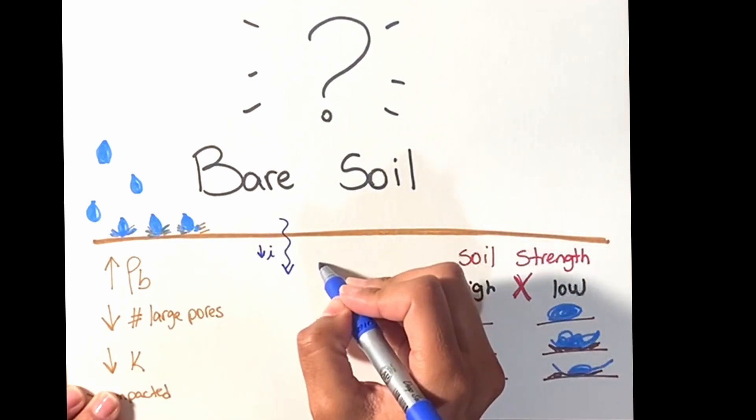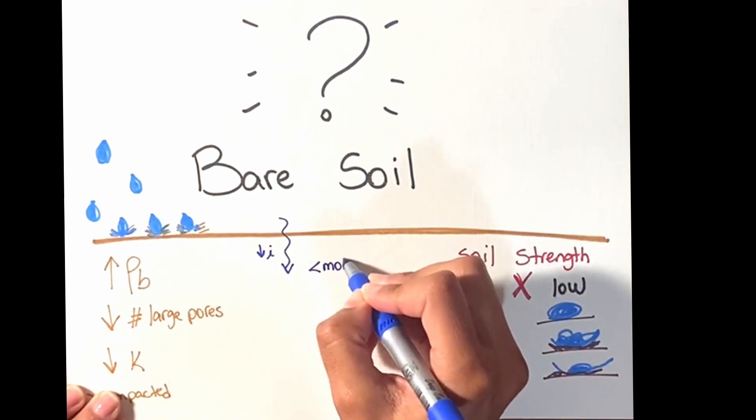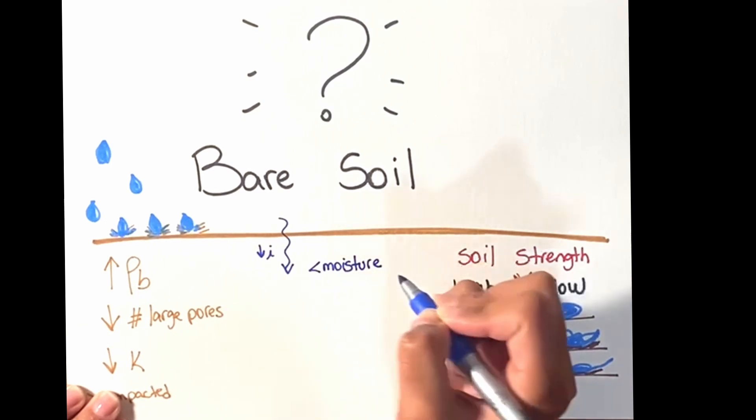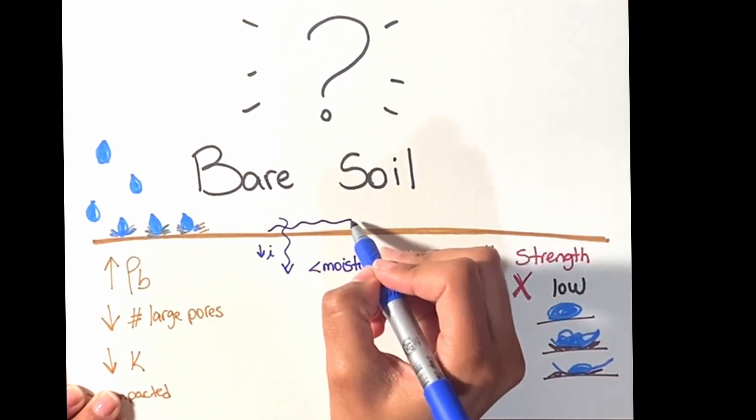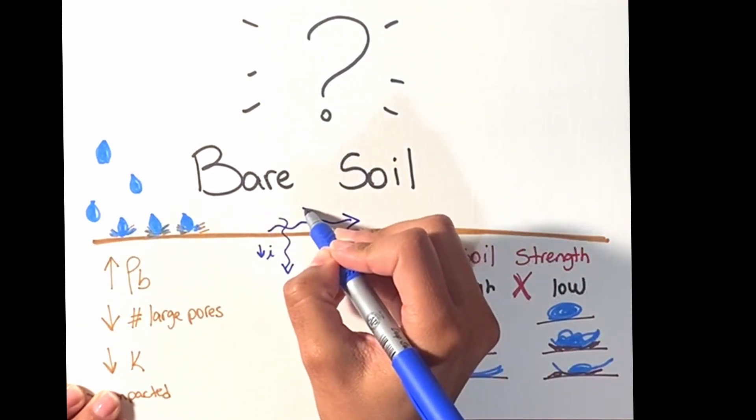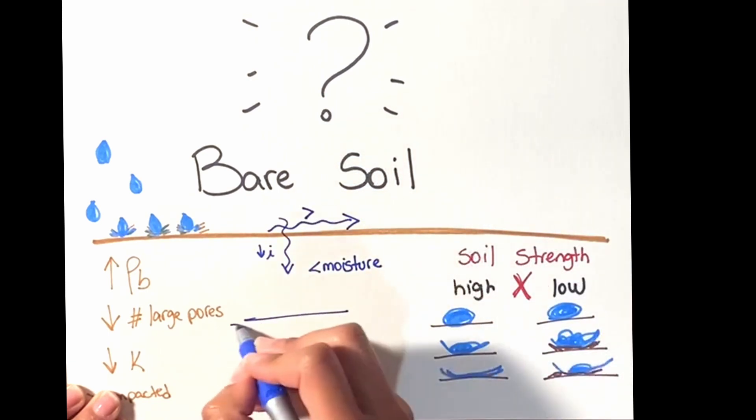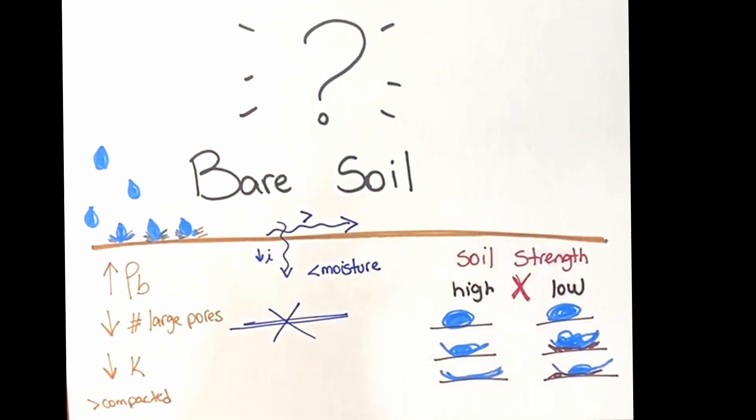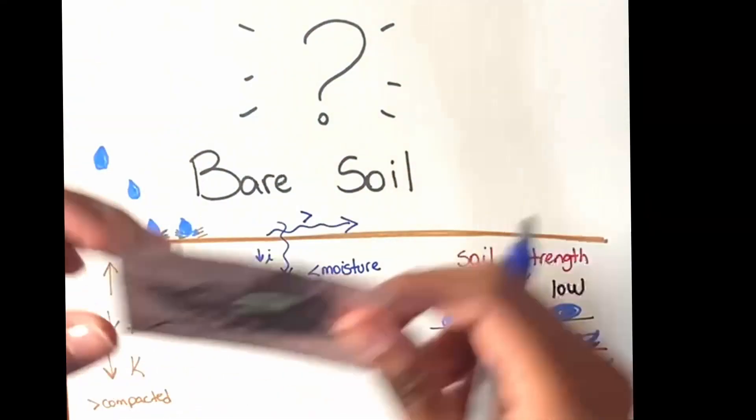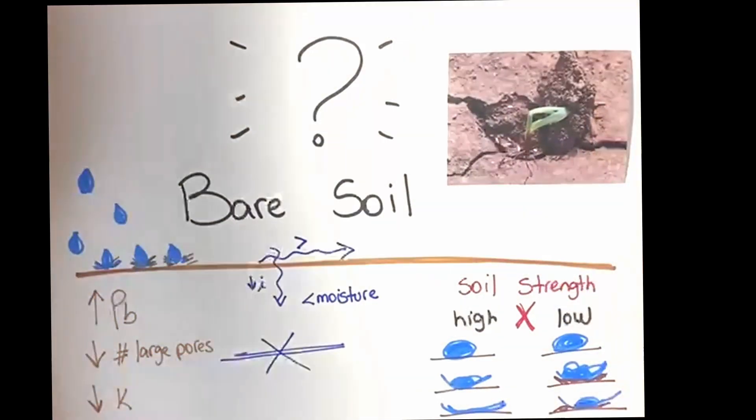It leads to decreased infiltration rate, reduction of soil moisture, increased runoff, and reduced groundwater recharge. Crusting also slows or completely inhibits seedling emergence.